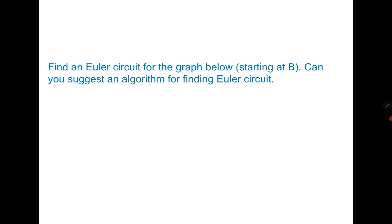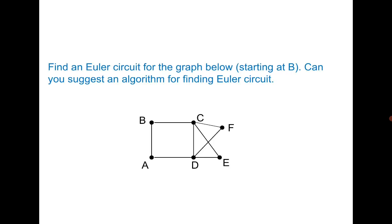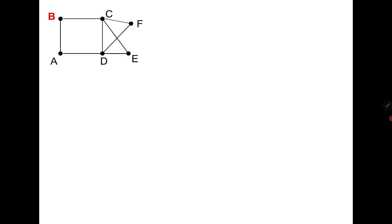Now we are going to see an algorithm to compute an Eulerian circuit if the graph is Eulerian. Consider the following graph for which we need to find an Eulerian circuit. It is already mentioned that we need to start at vertex B.